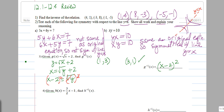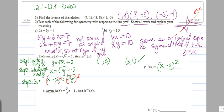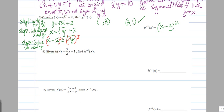Let's write the steps for finding an inverse. Step 1 is to change g of x to y — write y for g of x. Step 2 is to interchange x and y. Step 3 is to solve for the new y. This is the process we're going to follow for numbers 4 and 5.